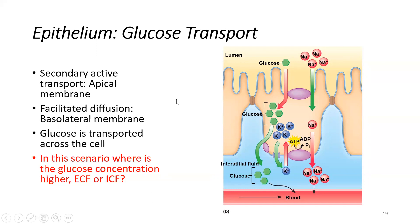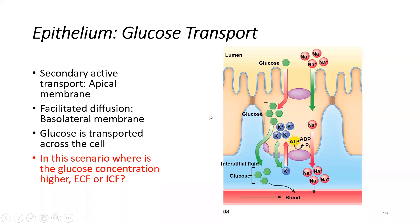In this scenario, where is glucose concentration highest? If we're moving glucose actively across the apical surface and passively across the basolateral surface, the higher concentration of glucose must be inside the cell. If we're actively pumping it in, it accumulates intracellularly — and that is correct.